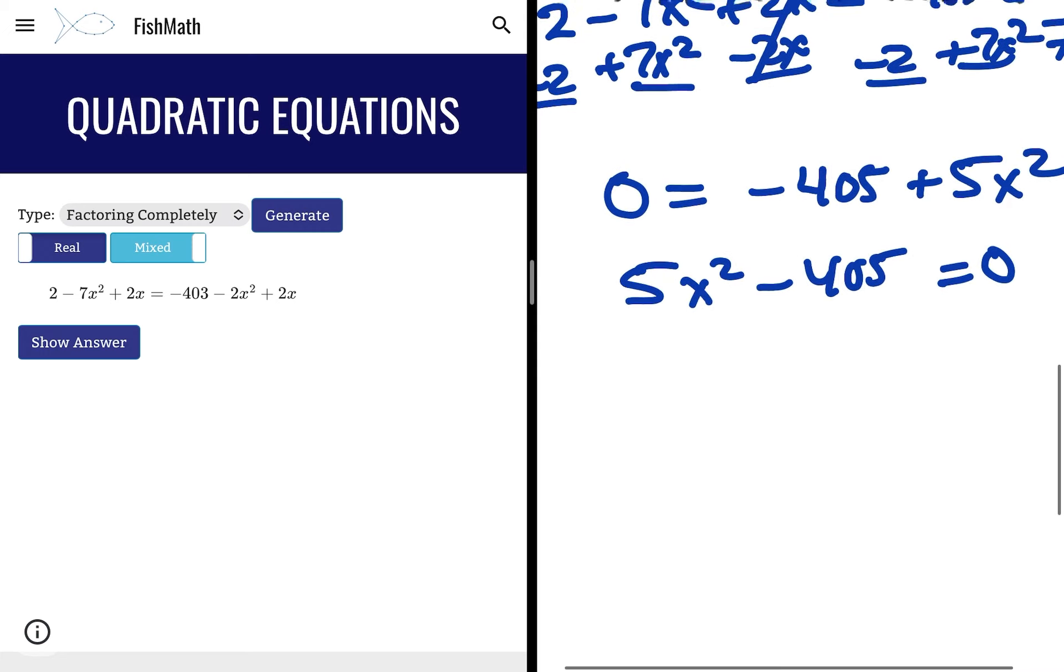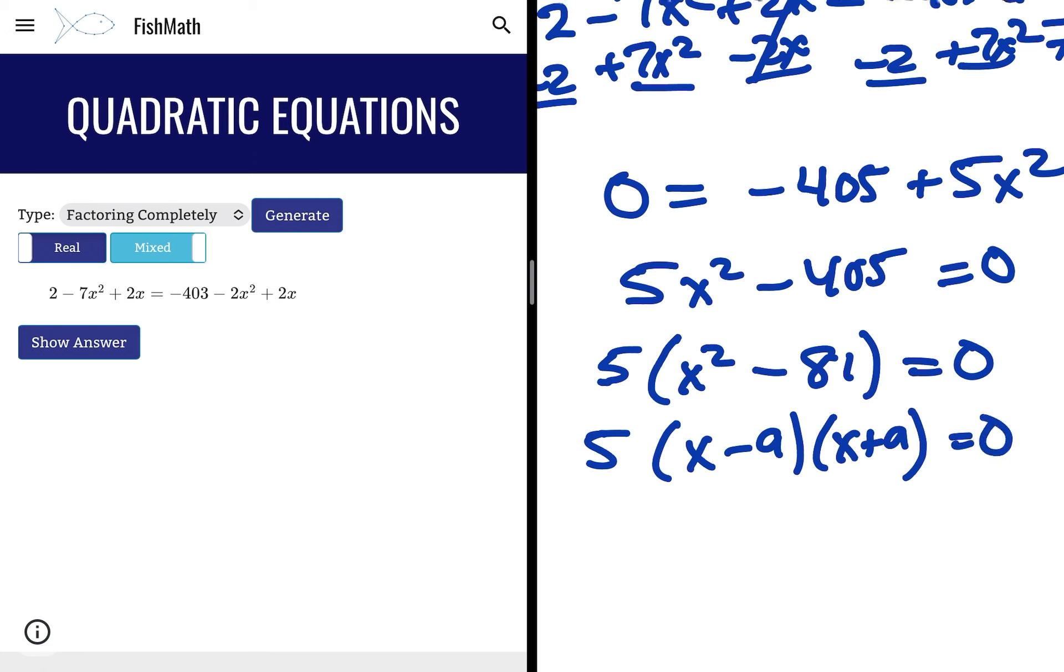So I'm going to get 0 = -405 + 5x², or 5x² - 405 = 0, a little bit more like how we're used to seeing it. Then I'm going to take that GCF out. 5 is the GCF here, so 5(x² - 81). And this is just difference of perfect squares again: (x - 9)(x + 9). And then our answers would be ±9 once you solve that.